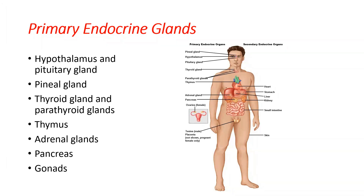And lastly among primary endocrine glands, the gonads — essentially the ovaries in females and the testes in males — also play a major endocrine role.